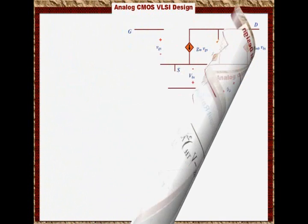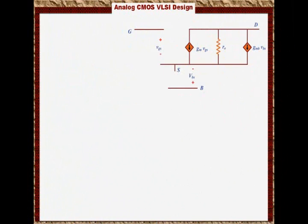The third important parameter is the body effect transconductance, which is Gmb. Now Gmb is defined as ∂Id/∂Vbs. How much the current will change if Vbs changes. If Vbs changes, the current changes, and the ratio of ∂Id/∂Vbs is the body effect transconductance Gmb.